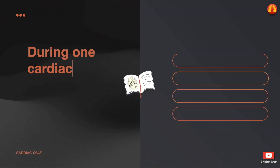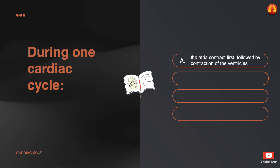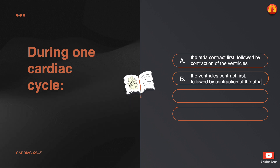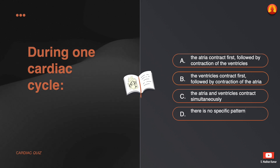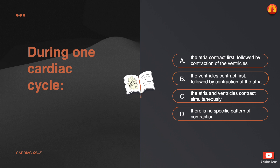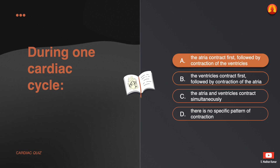During one cardiac cycle: A. The atria contract first, followed by contraction of the ventricles. B. The ventricles contract first, followed by contraction of the atria. C. The atria and ventricles contract simultaneously. D. There is no specific pattern of contraction. The correct answer is: the atria contract first, followed by contraction of the ventricles.